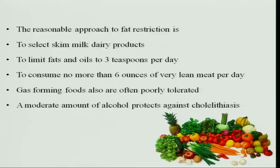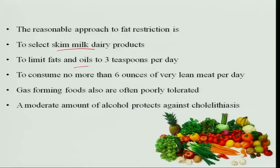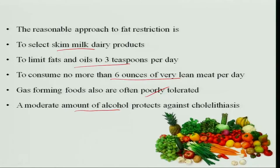To reduce fat in the diet, select skim milk, which has zero percent fat. Limit fats and oils to 3 teaspoons per day, which amounts to about 10 to 15 grams of oil. Choose very lean meat — meat without fat. Gas-forming foods should also be avoided as they add to abdominal pain. A moderate amount of alcohol can protect against cholelithiasis, but alcohol should still be restricted during these disorders.